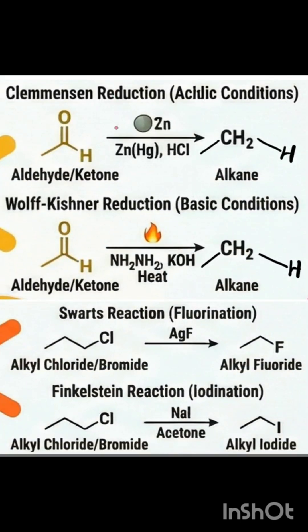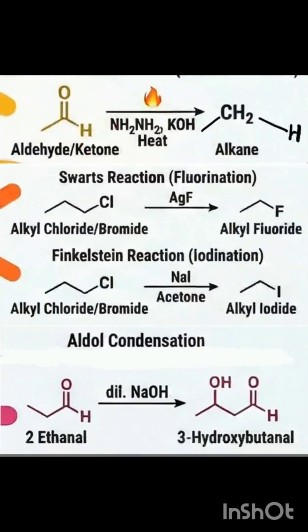The next category is Clemmensen reduction and Wolff-Kishner reduction. Clemmensen reduction happens under acidic conditions, while Wolff-Kishner reduction occurs under basic conditions. But eventually both convert C=O to CH2, forming an alkane.